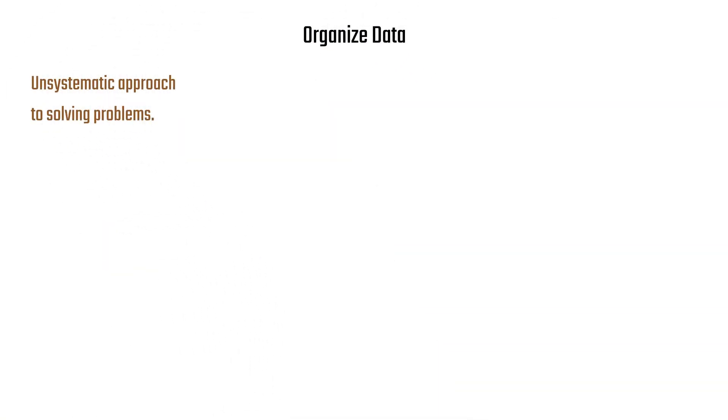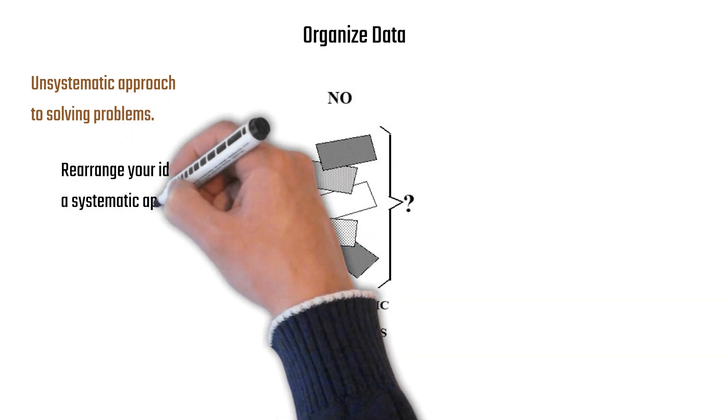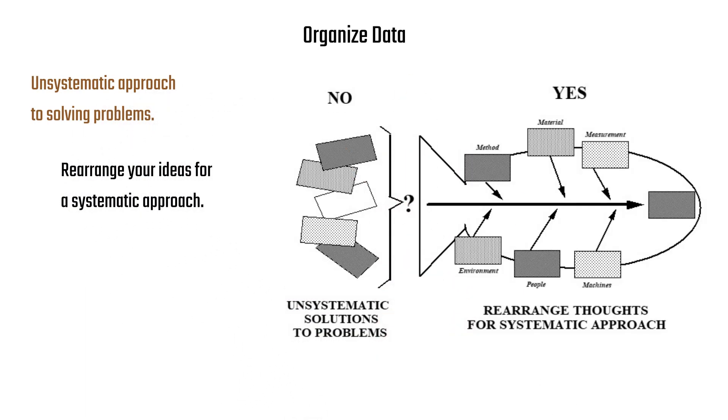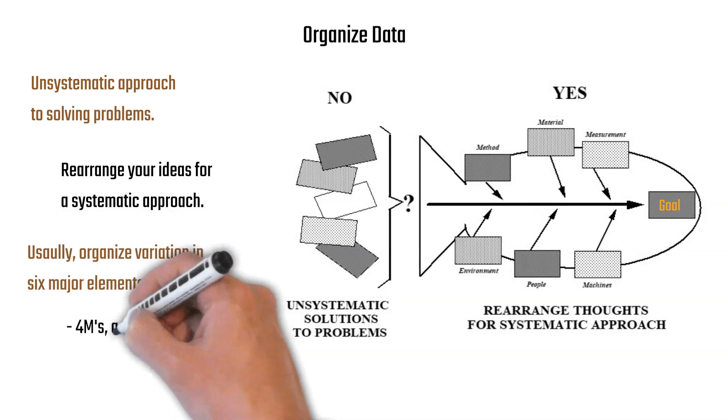But what they do is organize data. Far too often, we have an unsystematic approach to solving problems. And what we want to do is rearrange our ideas into a systematic approach. And that's what the cause and effect diagram does.